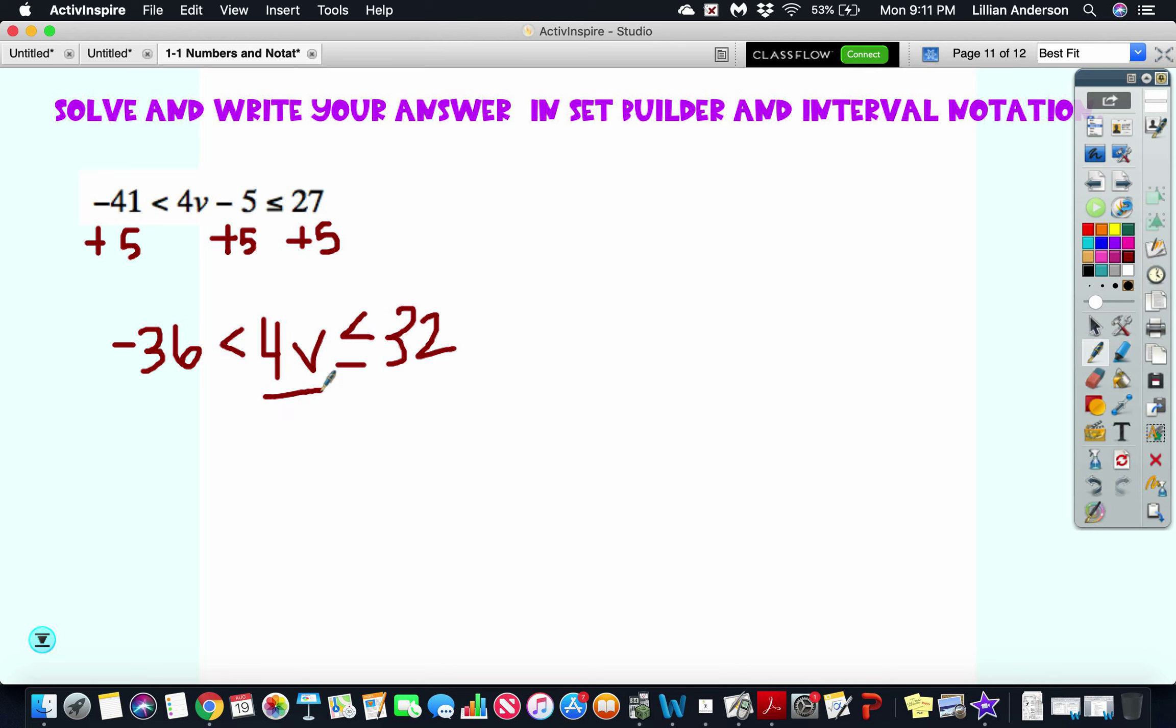Just like before, when you're solving, whatever you do to one side you've got to do to the other side as well. I'm going to divide everything by 4. That's going to give me negative 9 is less than v, which is less than or equal to 8.